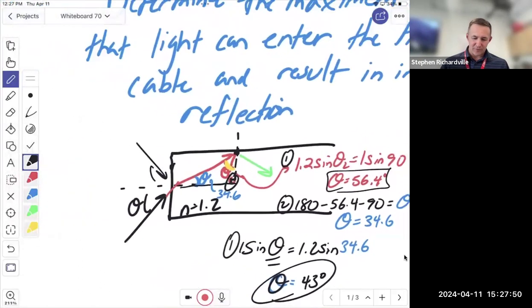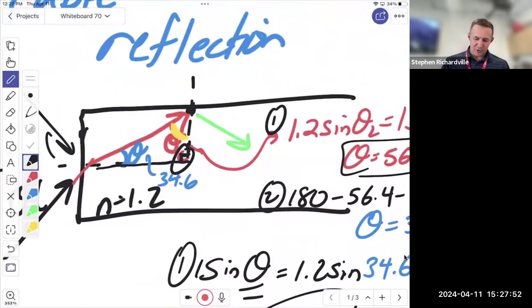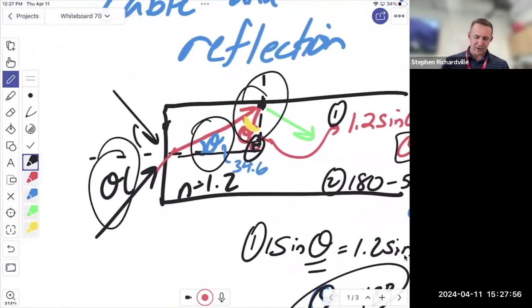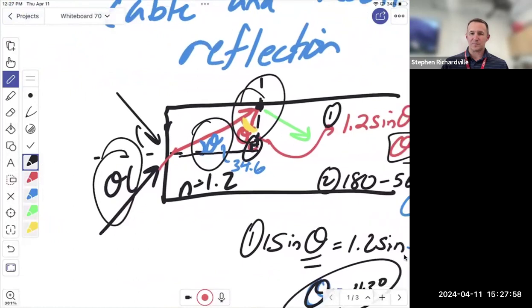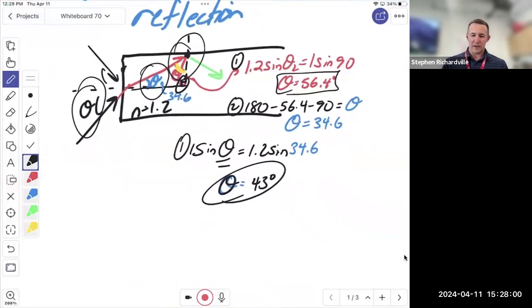That's how to do the fiber optic cable. You find the critical angle up here to get the angle here, to get the angle here. It's working backwards. Cool? Okay.